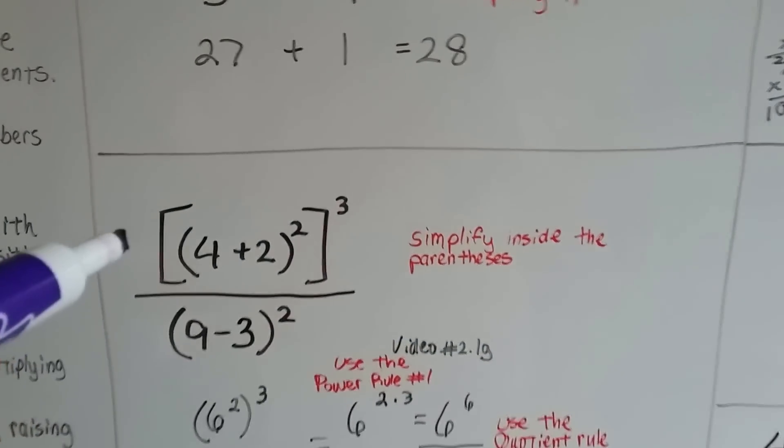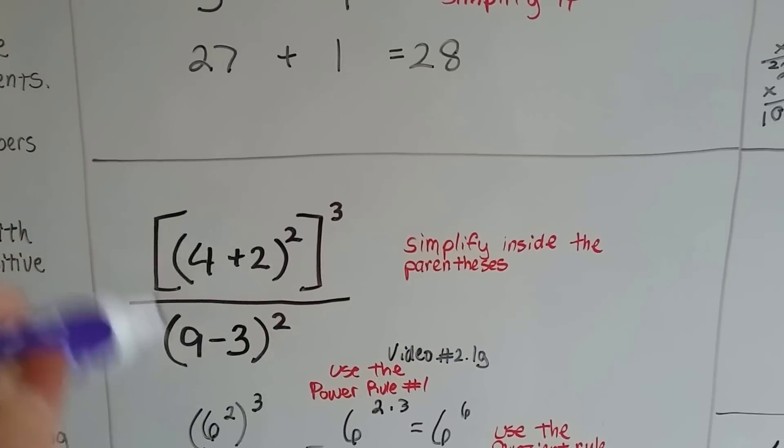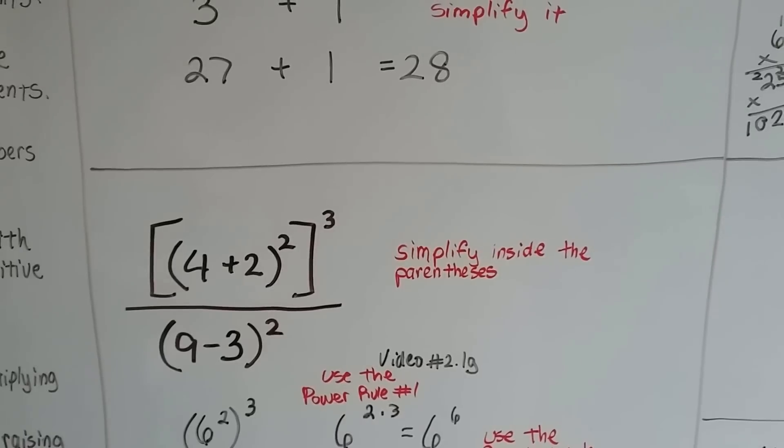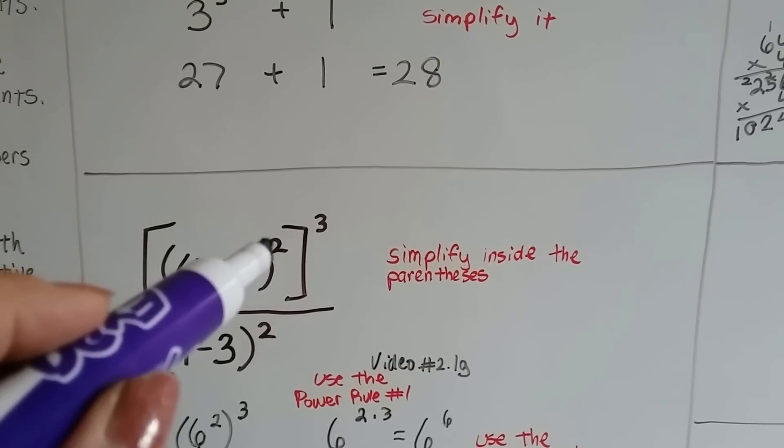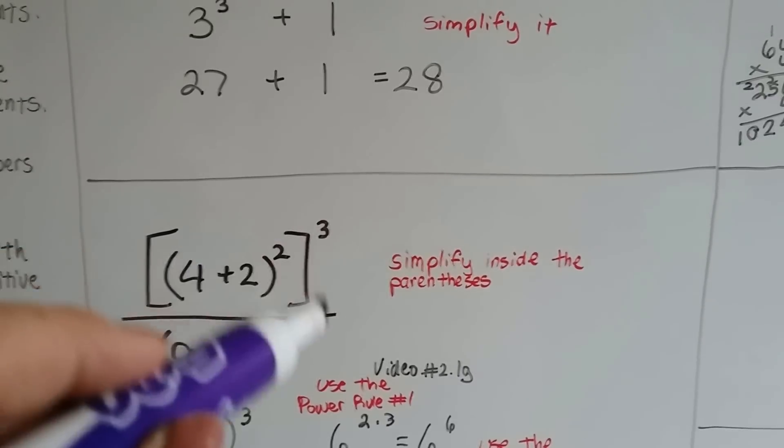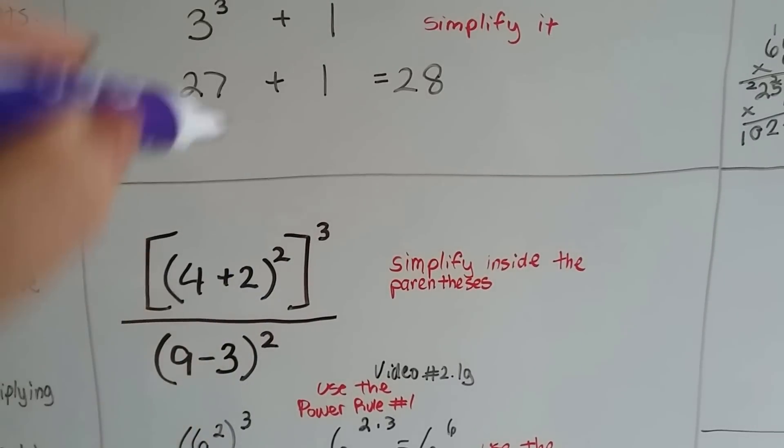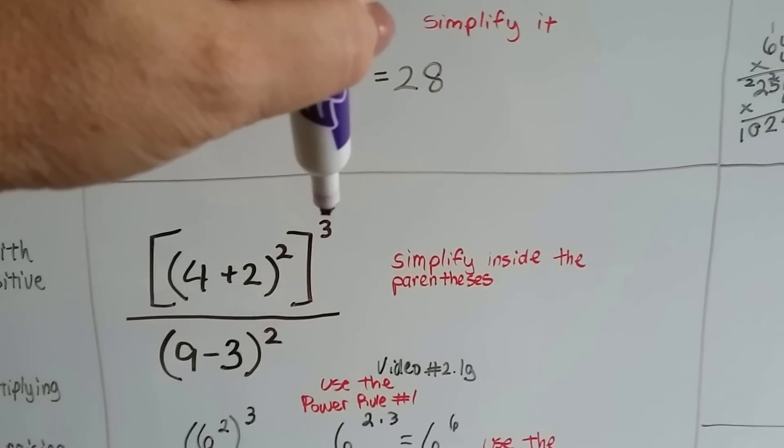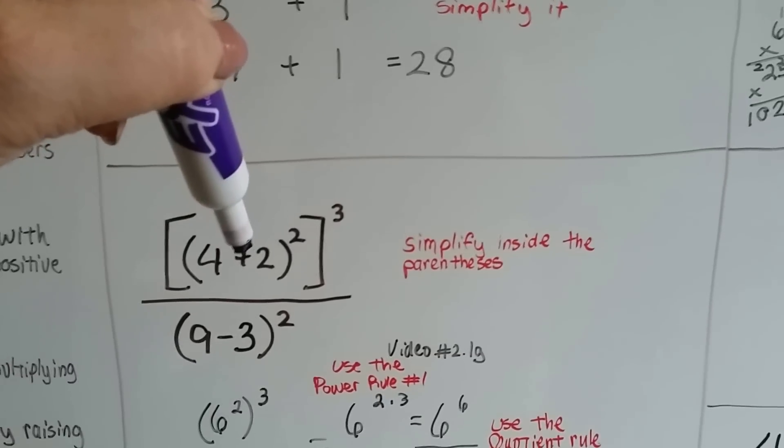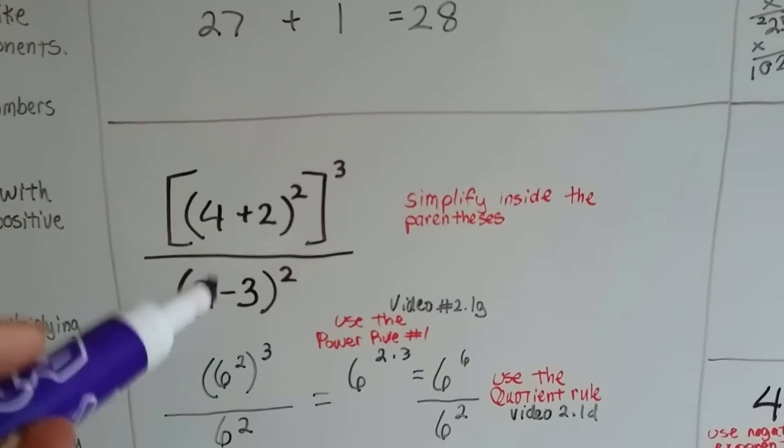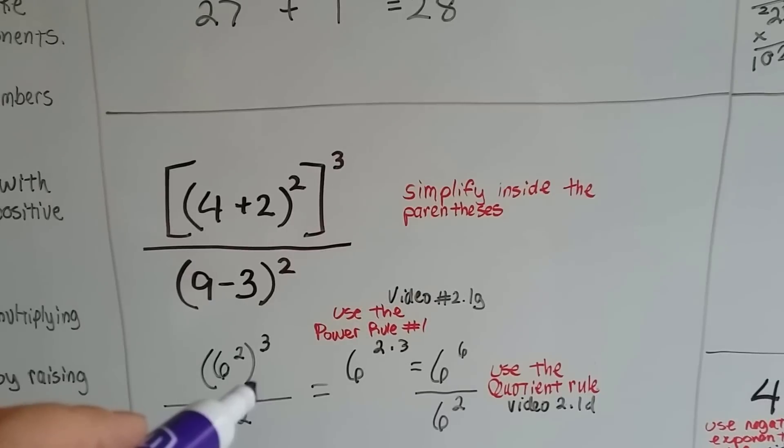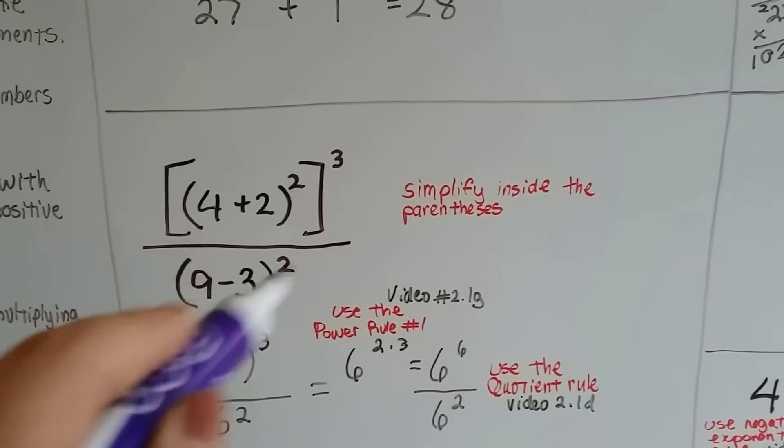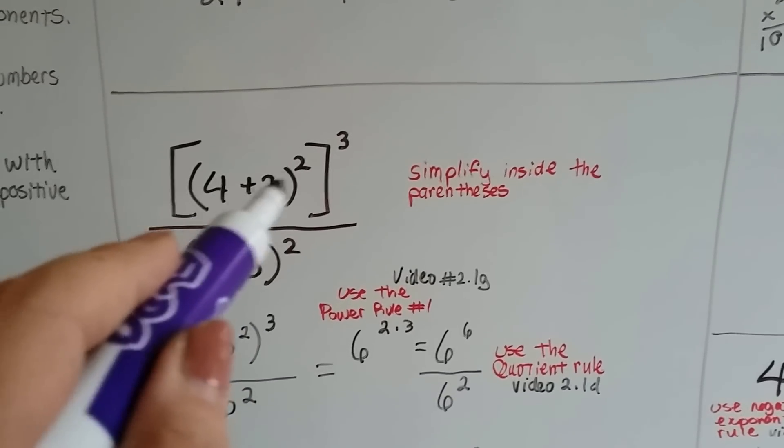Let's try this one. We've got, it looks very difficult, I know, but if you take it in little pieces, it's not hard at all. We've got a 4 plus 2 inside of parentheses to the 2nd power. And then, we've got the brackets, and it's to the 3rd power on the outside. And this whole thing is a fraction over 9 minus 3 to the 2nd power. So, let's do inside the parentheses first. 4 plus 2 is 6.